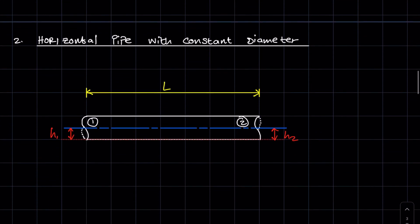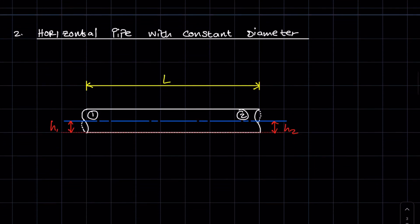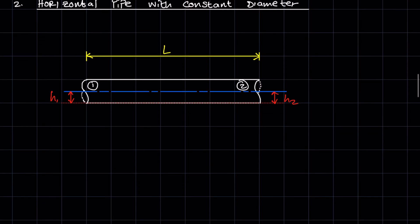The second case is where you have a horizontal pipe with a constant diameter. In such a case, the velocity of the water in the pipe is going to be constant, because if the diameter is constant, there is no changing area, and no changing area means that the velocity is constant. So because the velocity is constant, it means v1 and v2 are equal.